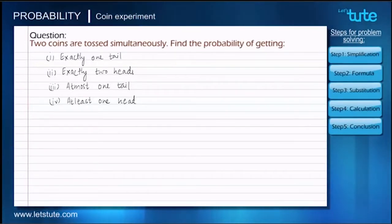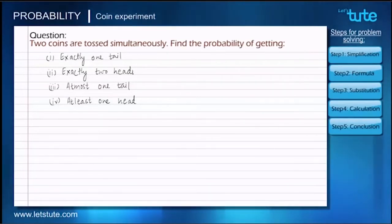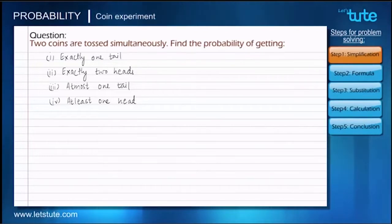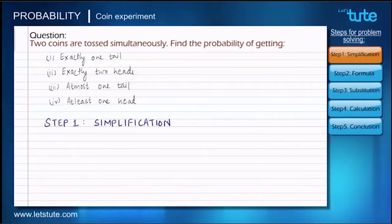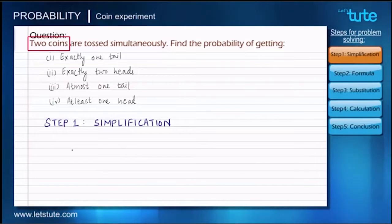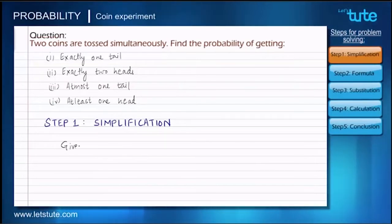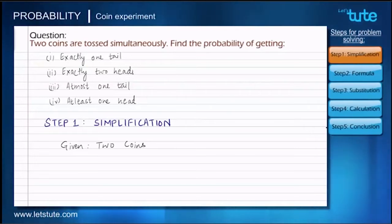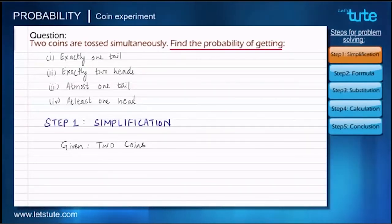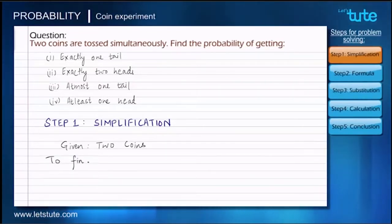Before starting to solve the problem, let me repeat and figure out what the problem is trying to say. This is our first step: simplification of the problem. We will try to simplify the problem as much as possible. We can clearly see we are dealing with two coins, so the first information we know is we are given two coins. Second, we have to find the probability, so we write what we have been given.